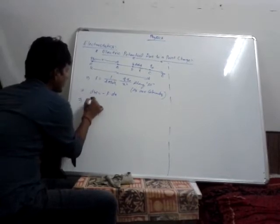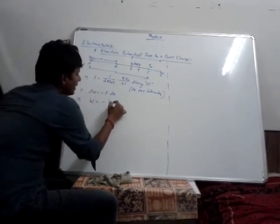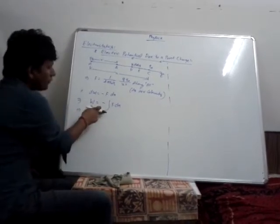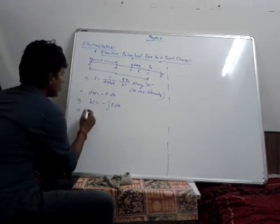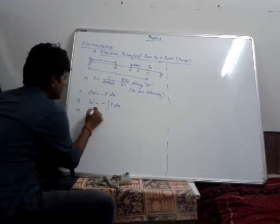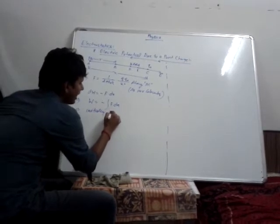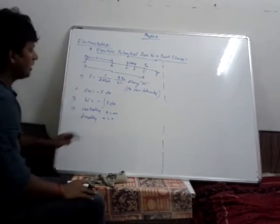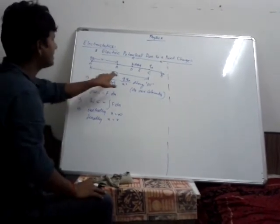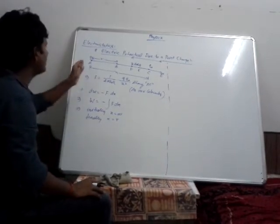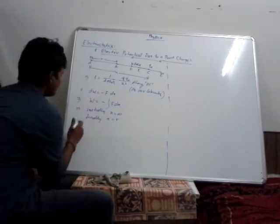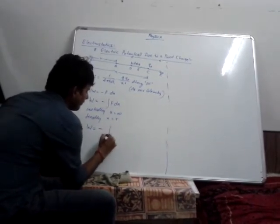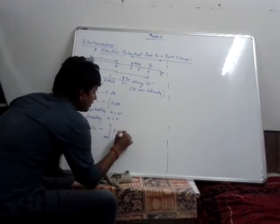When we are going for the entire work done W, we can do the integration of F into dx. But as of now we don't have the limit for the integration. Initially we are considering X is equal to infinity and finally X is equal to R — the first distance X between A and C is going to be infinity and between A and B the distance is going to be R. Hence we can put the limit and we will get W equal to the integral from infinity to R of F into dx.